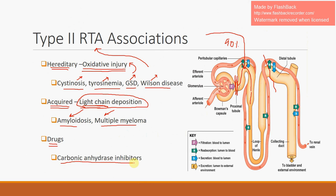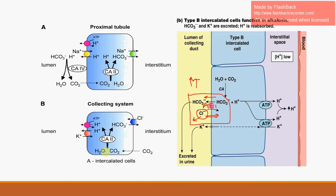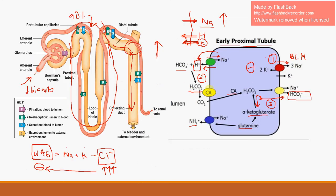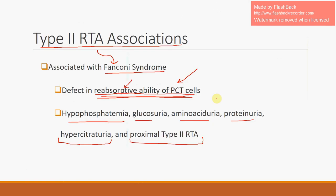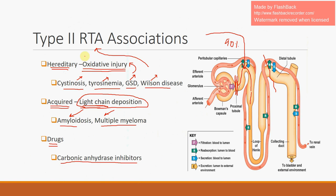Drug-related causes of type 2 RTA are most notably carbonic anhydrase inhibitors such as acetazolamide. By blocking the carbonic anhydrase step, carbonic acid cannot be broken down into H₂O and CO₂, preventing it from being filtered back into the proximal tubular cell. Without this step functioning, bicarbonate cannot be reabsorbed, again recreating the central hallmark of type 2 RTA. This concludes the section on type 2 renal tubular acidosis — stay tuned for the next video on type 4 RTA.